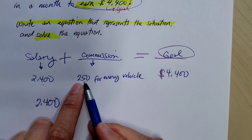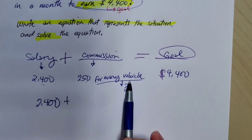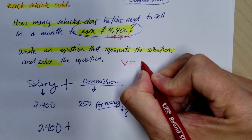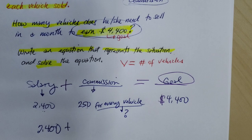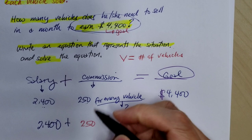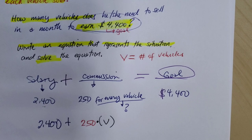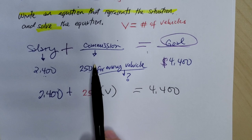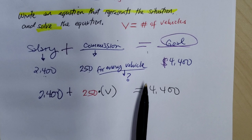Plus we know that he will get $250 for every vehicle. Do we know how many vehicles? We do not, because the question asks how many vehicles. So v, our variable, would represent the number of vehicles that he or she needs to sell. So $250 times v. We're multiplying v to 250, and this should equal $4,400. Salary plus commission should equal the goal of earning $4,400.